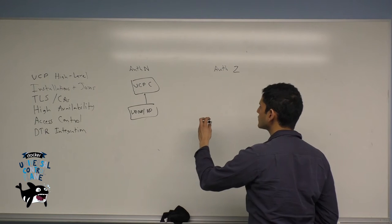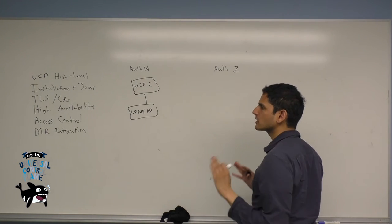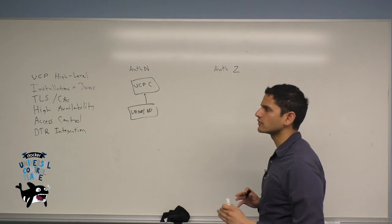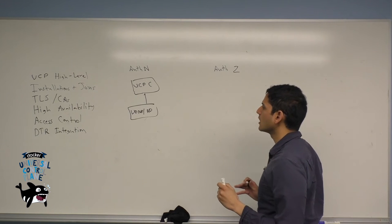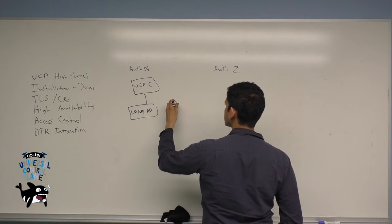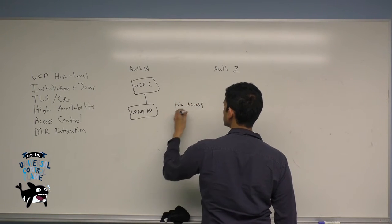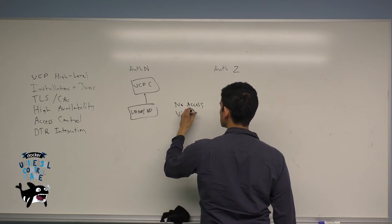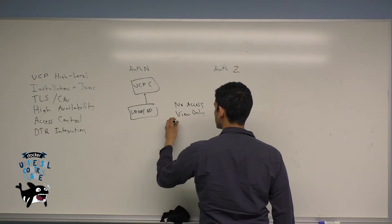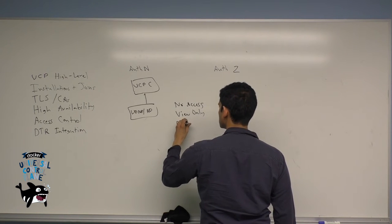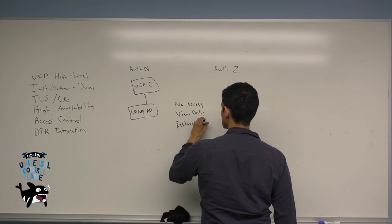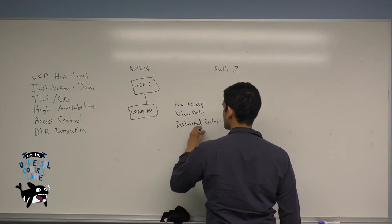So for individual user permissions, you can set a particular level of resources for a given user. This tells you what type of resources they're able to access. Here are the four levels: no access, view only, restricted control, and full control.